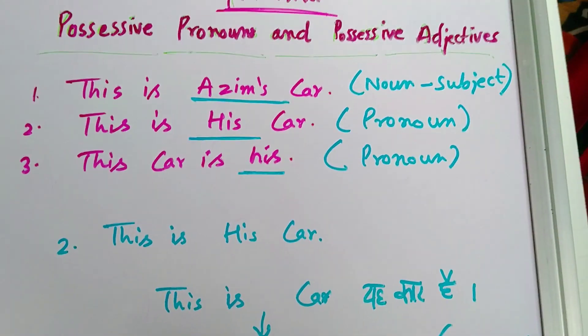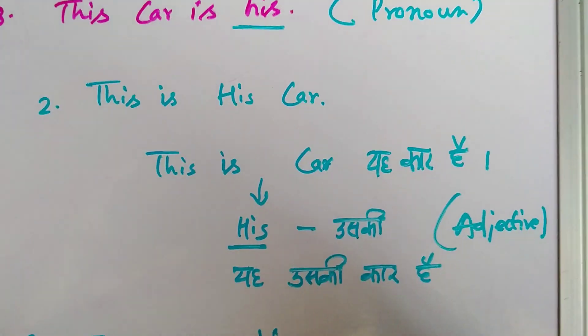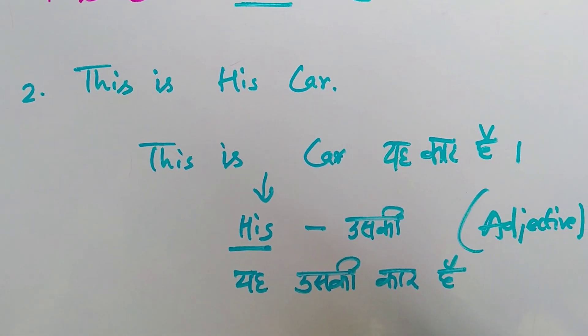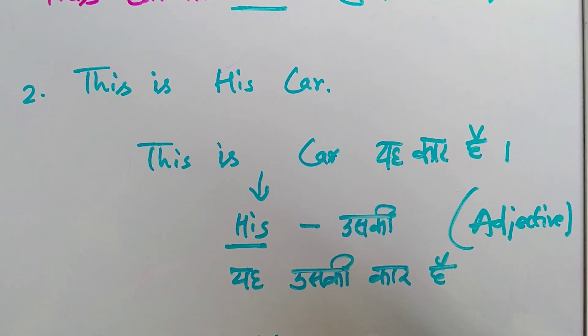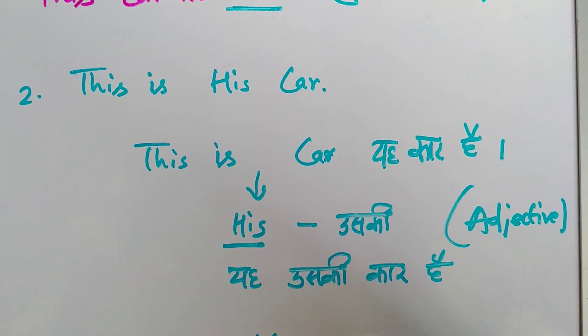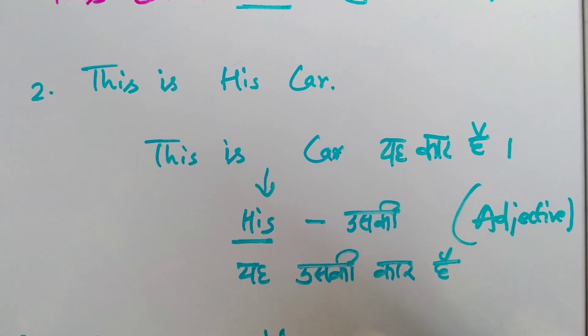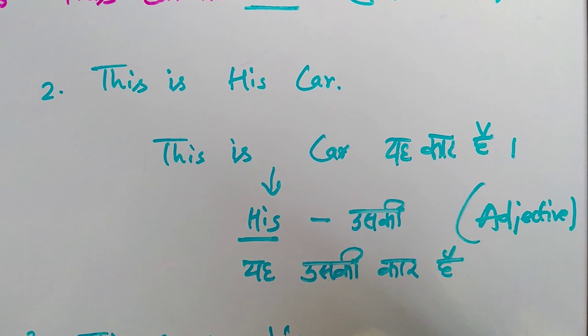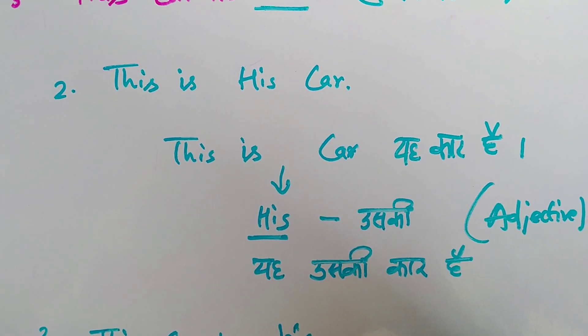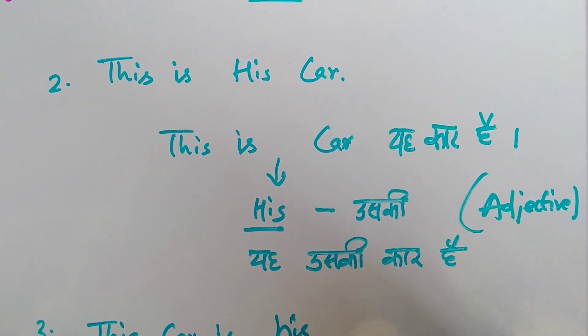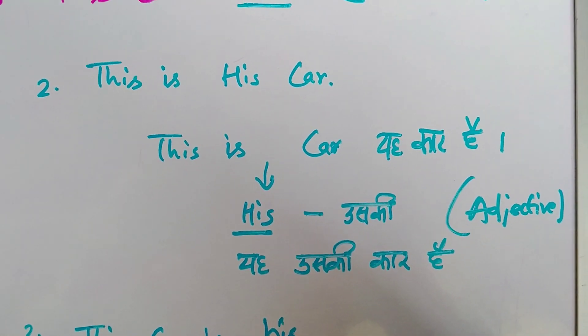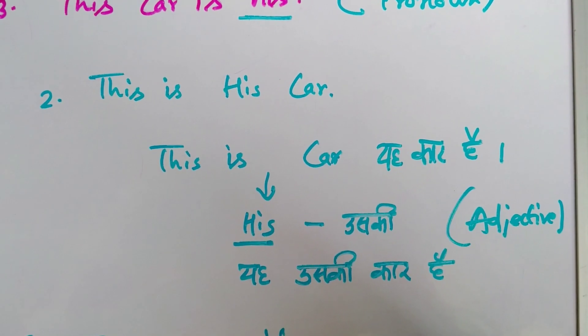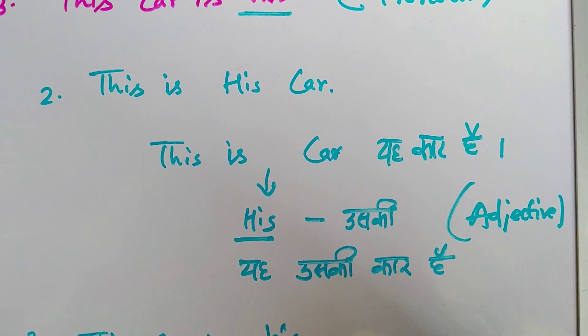Let's look at the second sentence. This is his car. Now if you can see very carefully students, if I don't use his here, this is car. What do we know from his? That it is his car. So for car, the adjective provides extra information. Car is our noun here, it is our subject. But what car? His car. So his is used as an adjective here. We will call it possessive adjective.